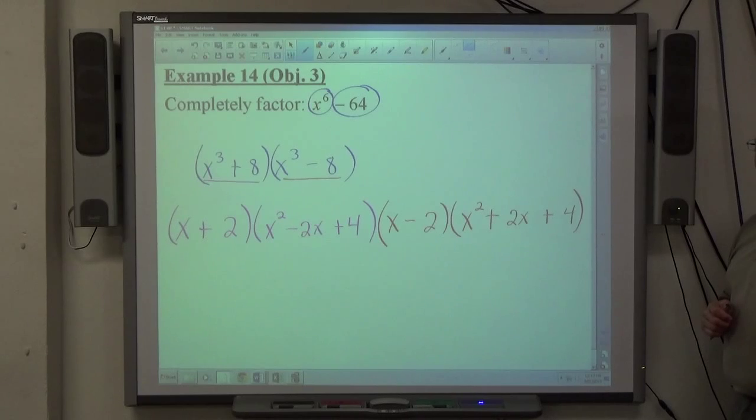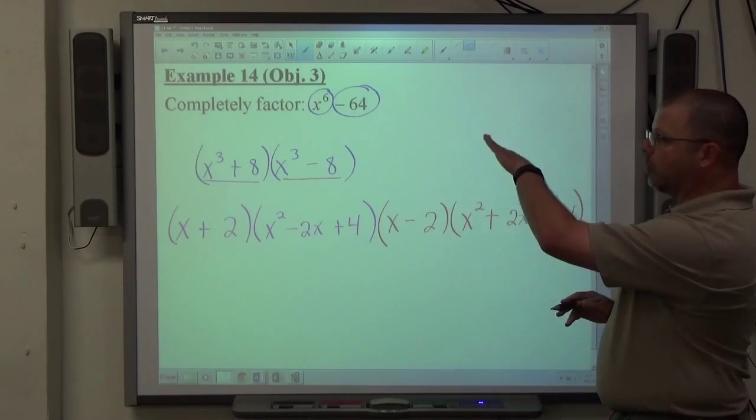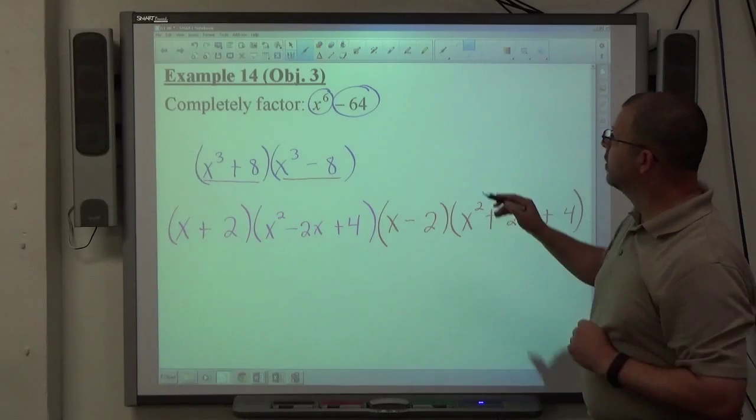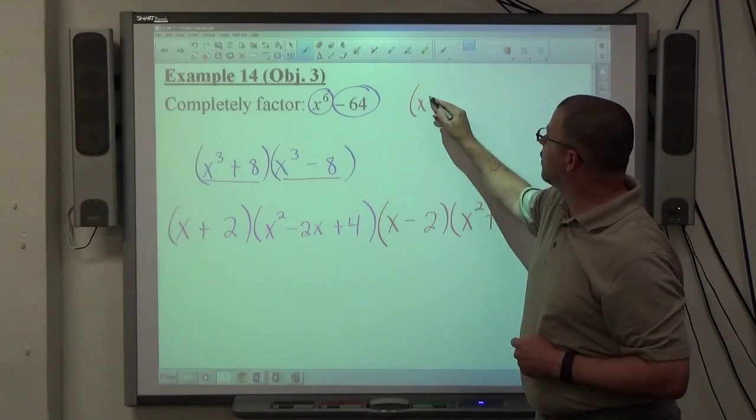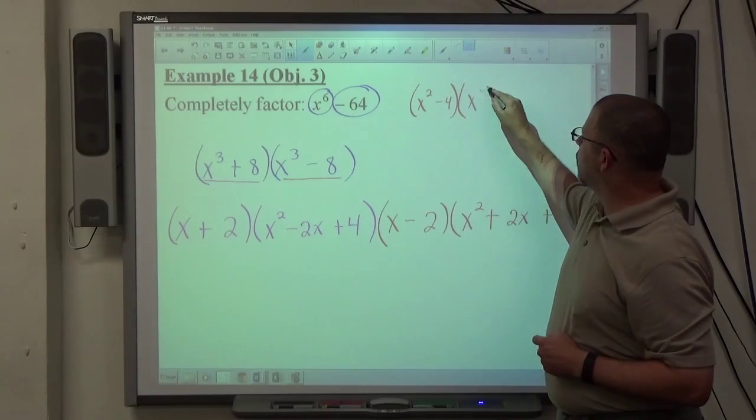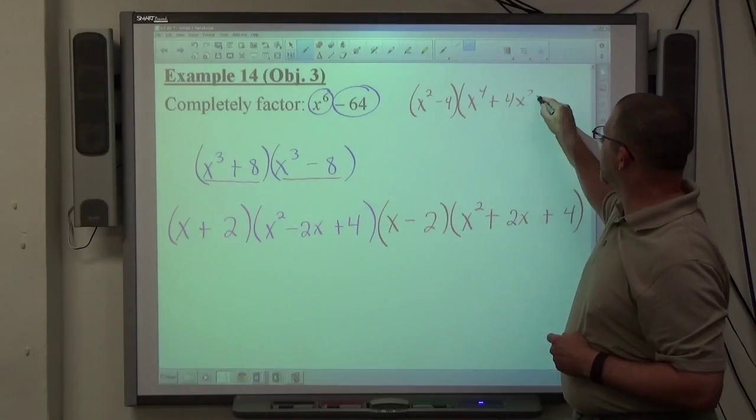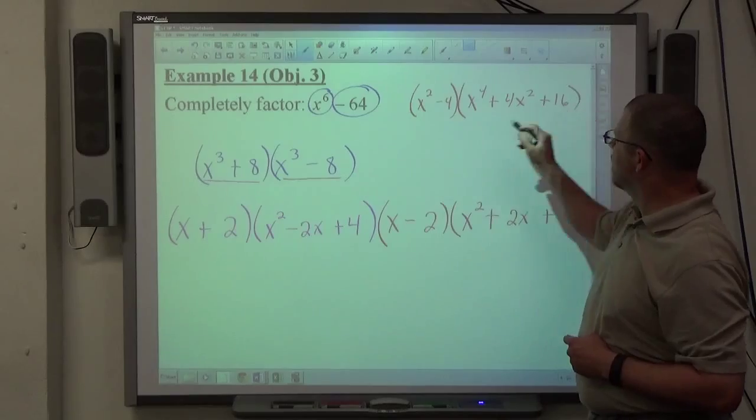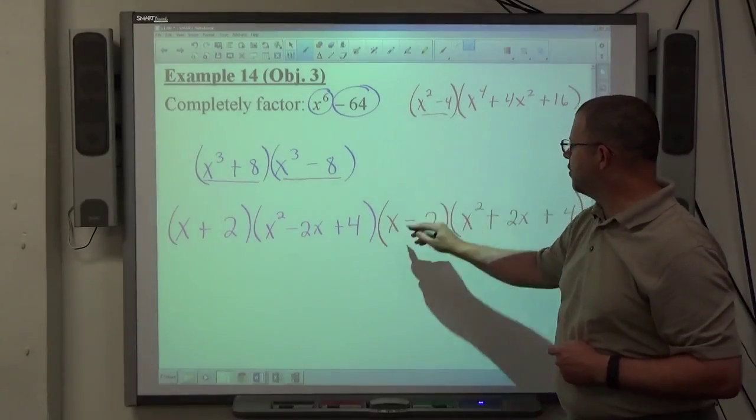And that's the entire factored form. Now, imagine had we gone with the difference of cubes first. We would have gotten X to the second minus 4, then X to the fourth, plus 4X squared, plus 16.